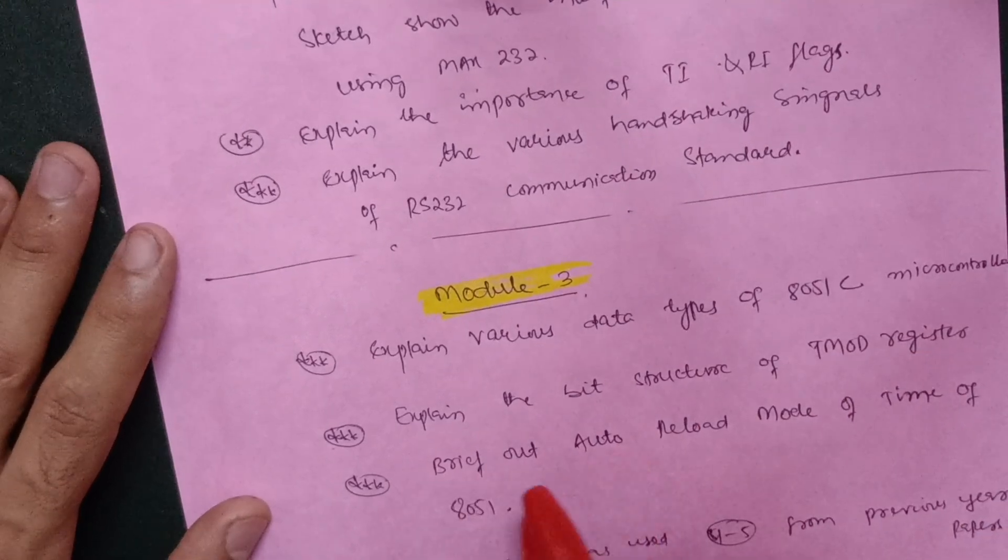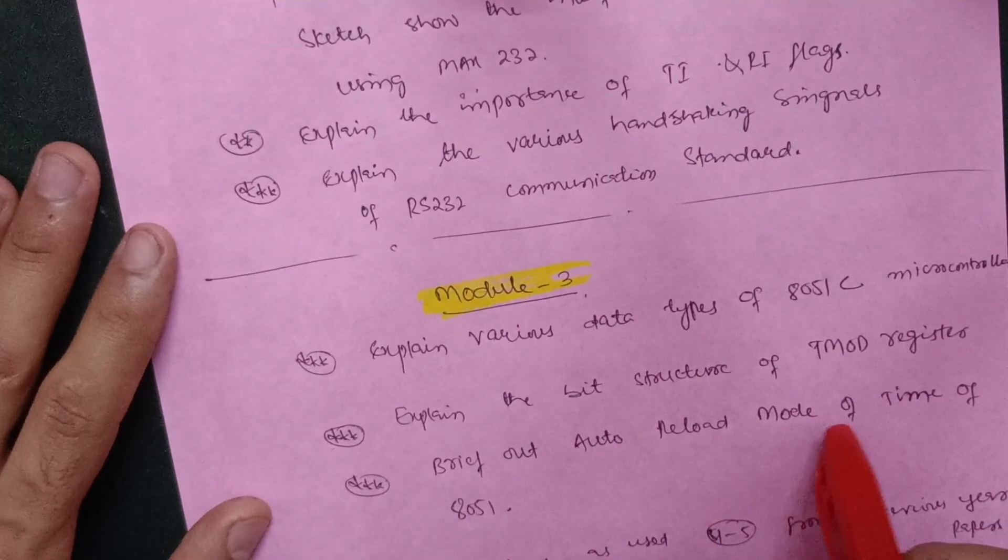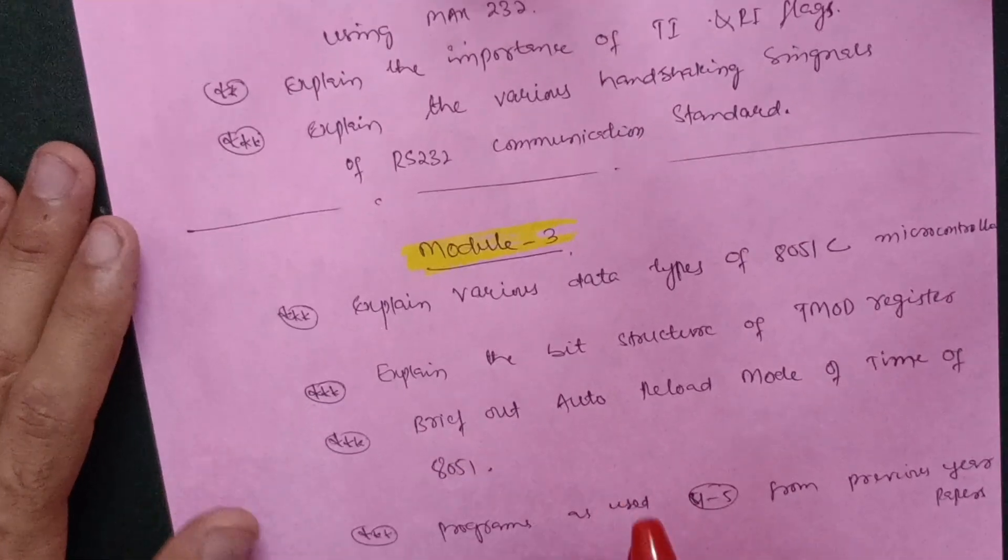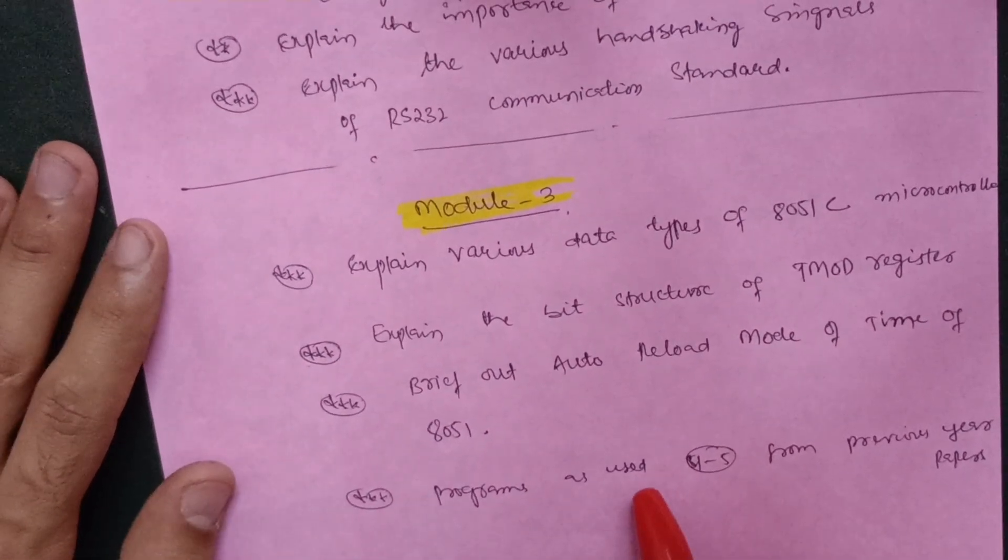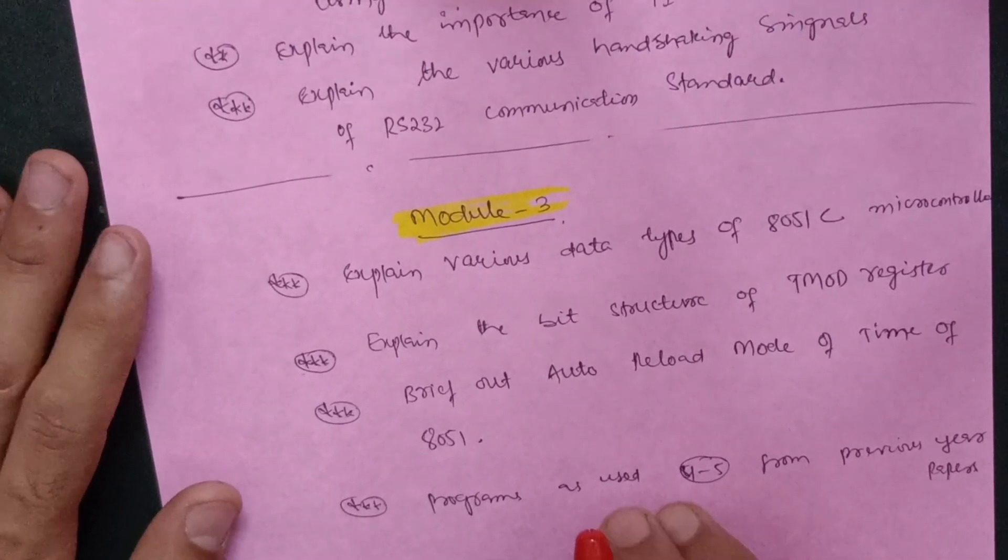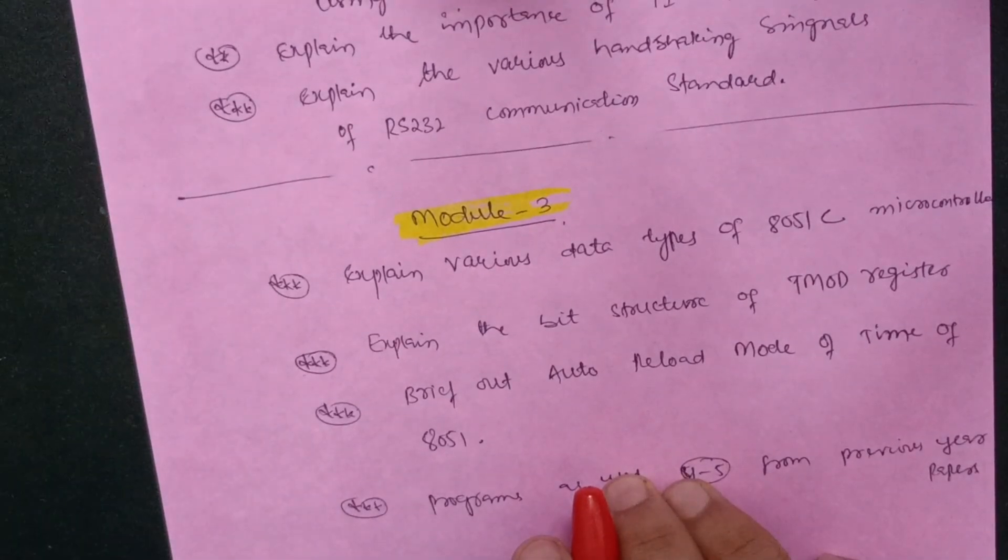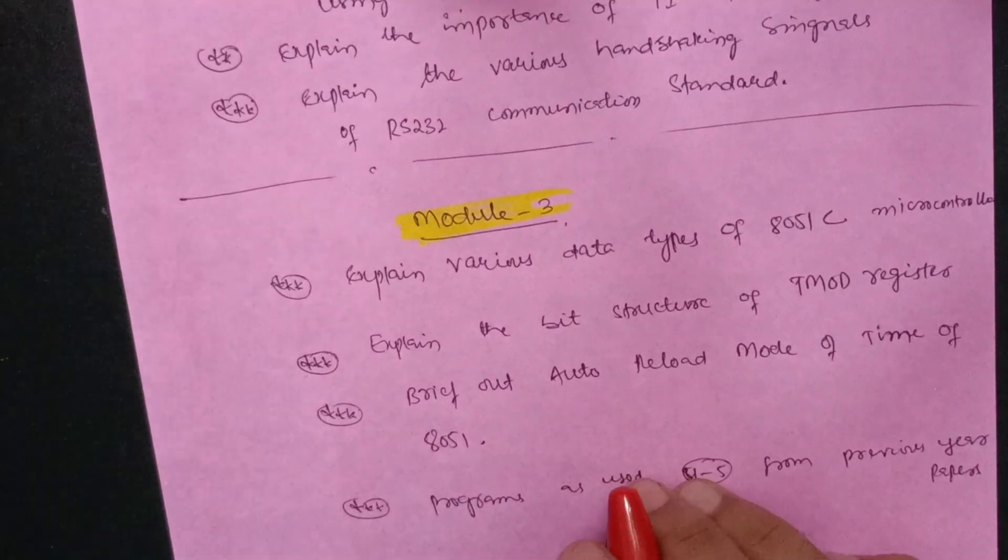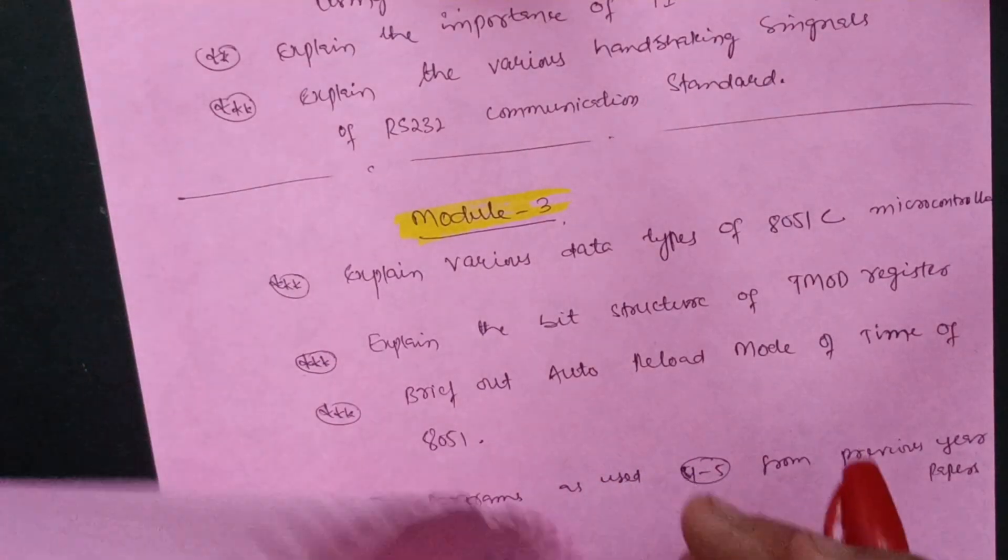Explain the bit structure of TMOD register and briefly explain auto reload mode of timer of 8051. Then programs as usual, four to five programs from the previous year papers you can go through. I think this much content is enough to cover this particular subject which is the tough subject for EEE students.